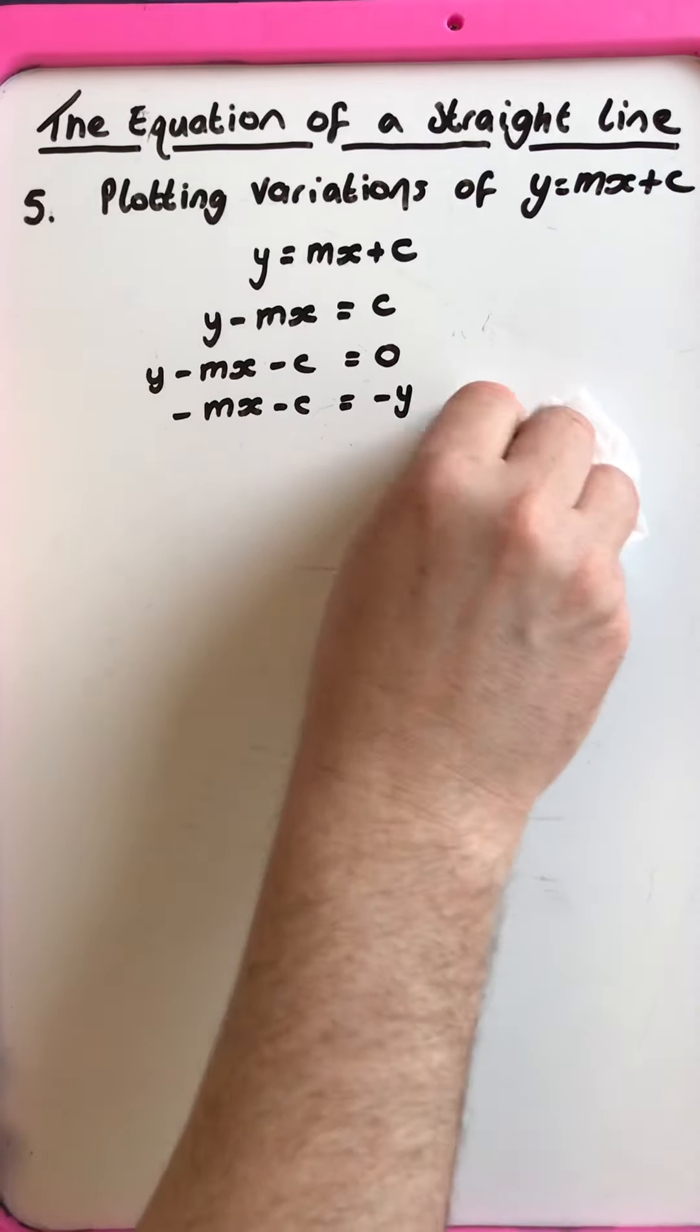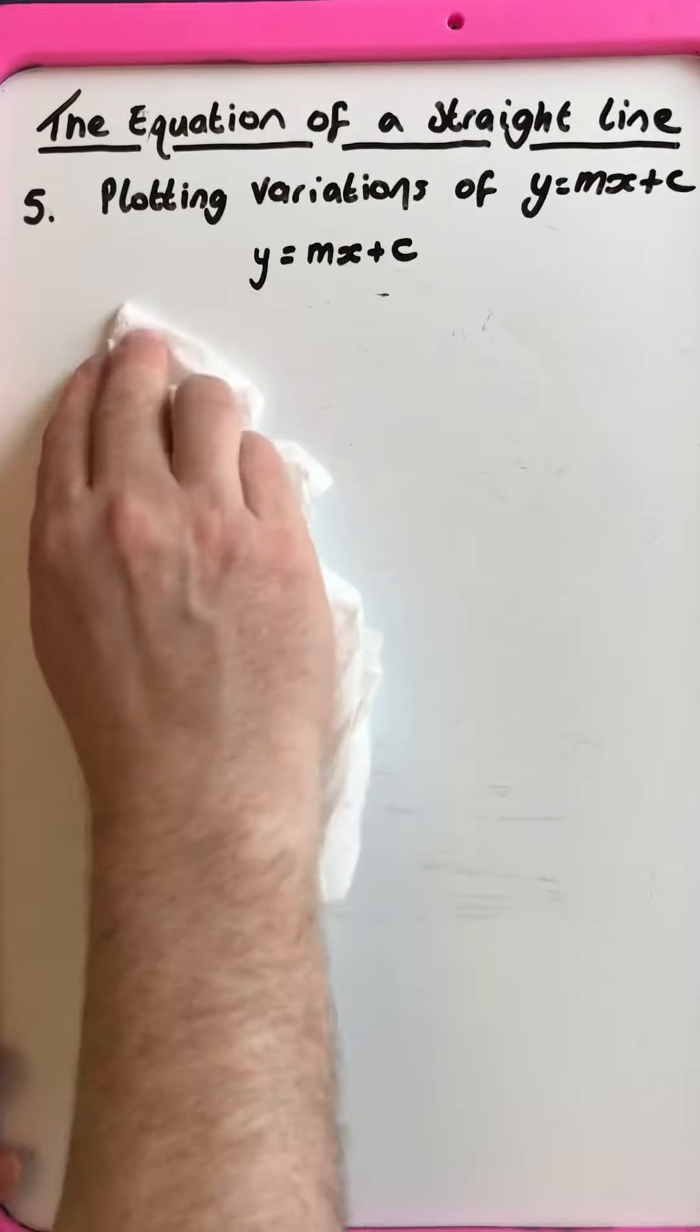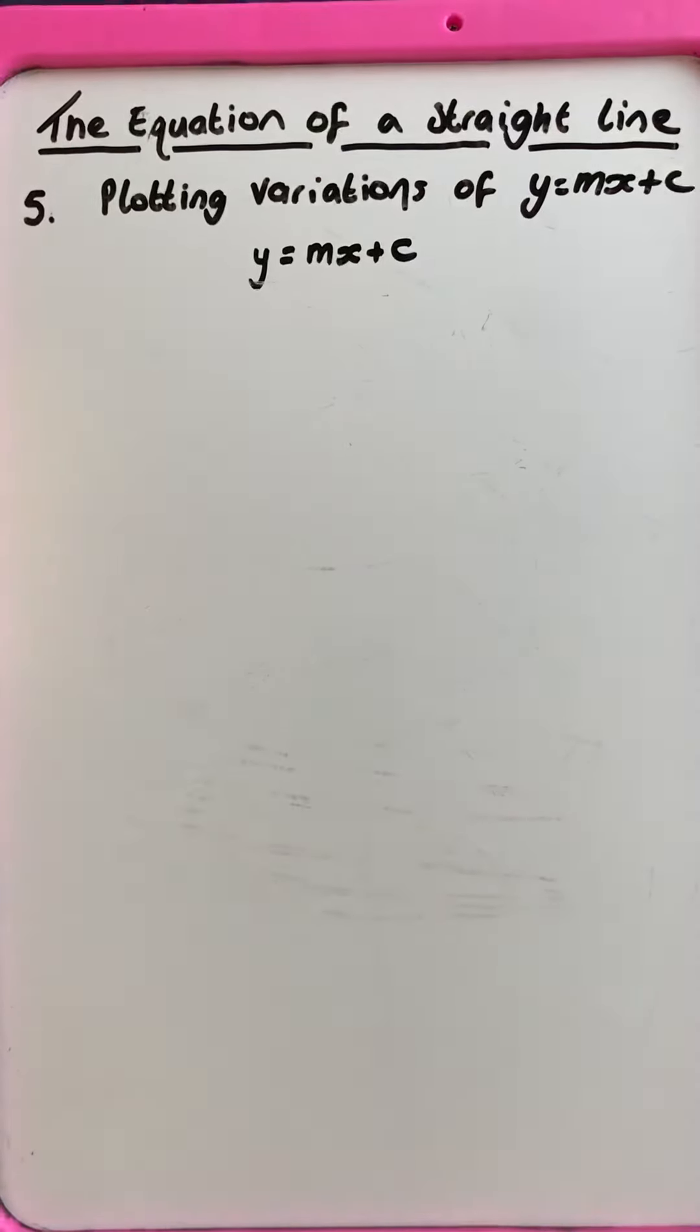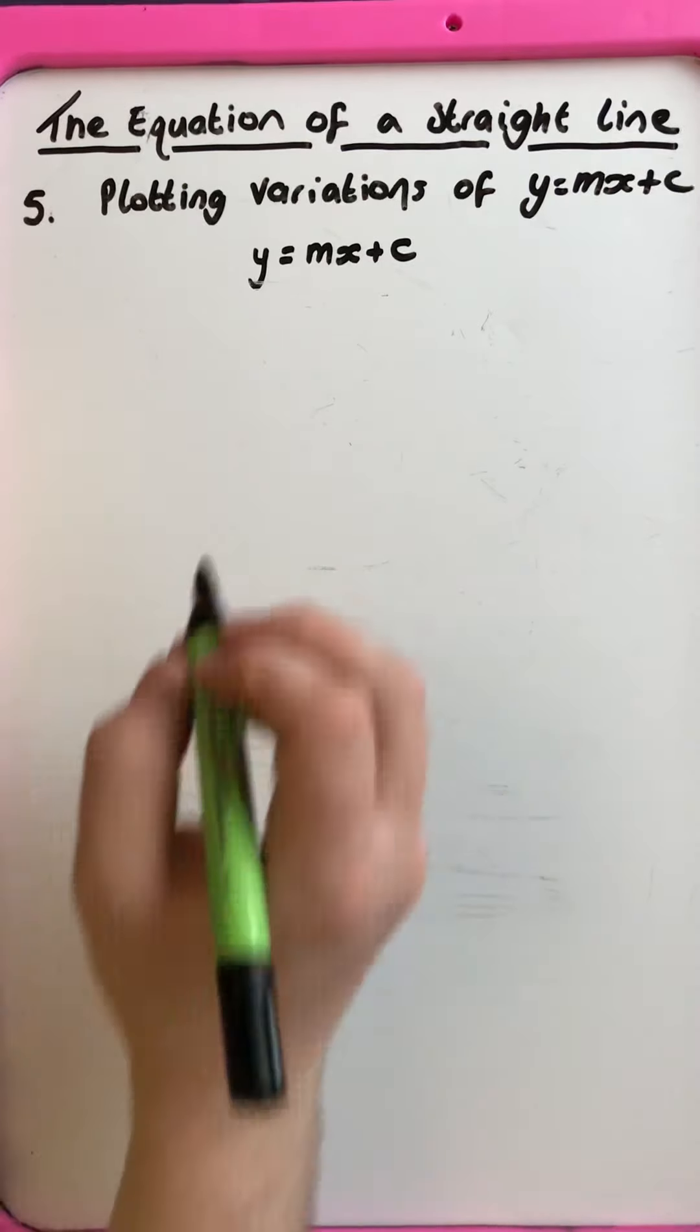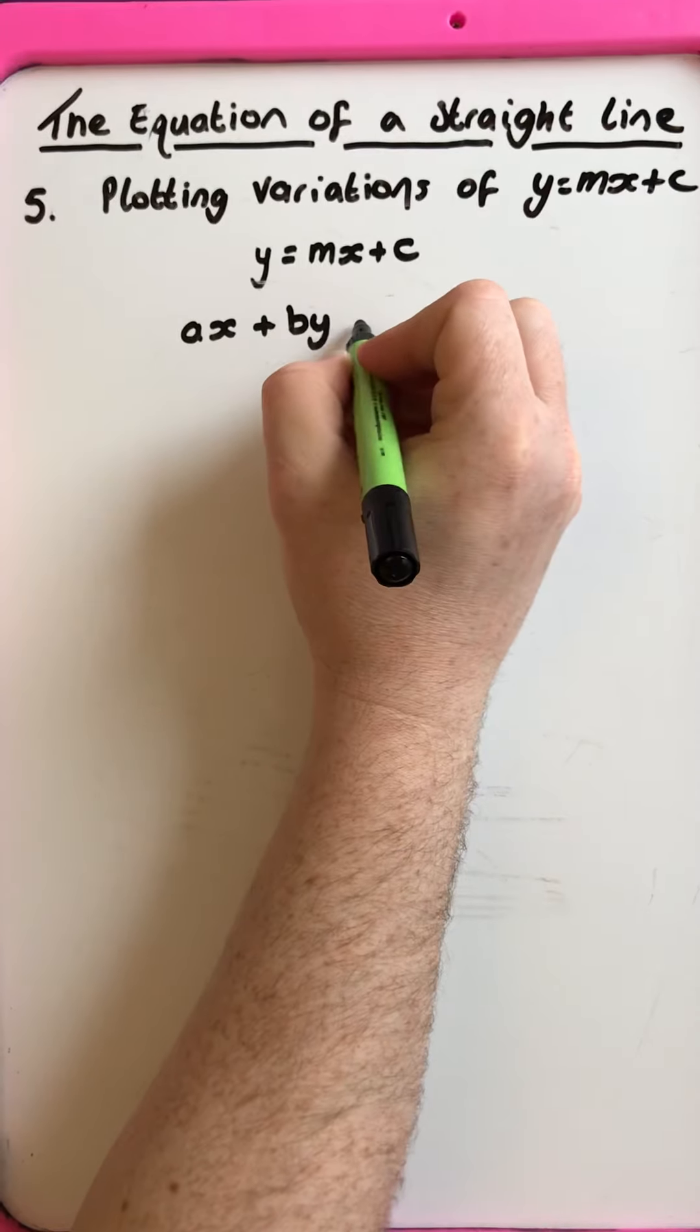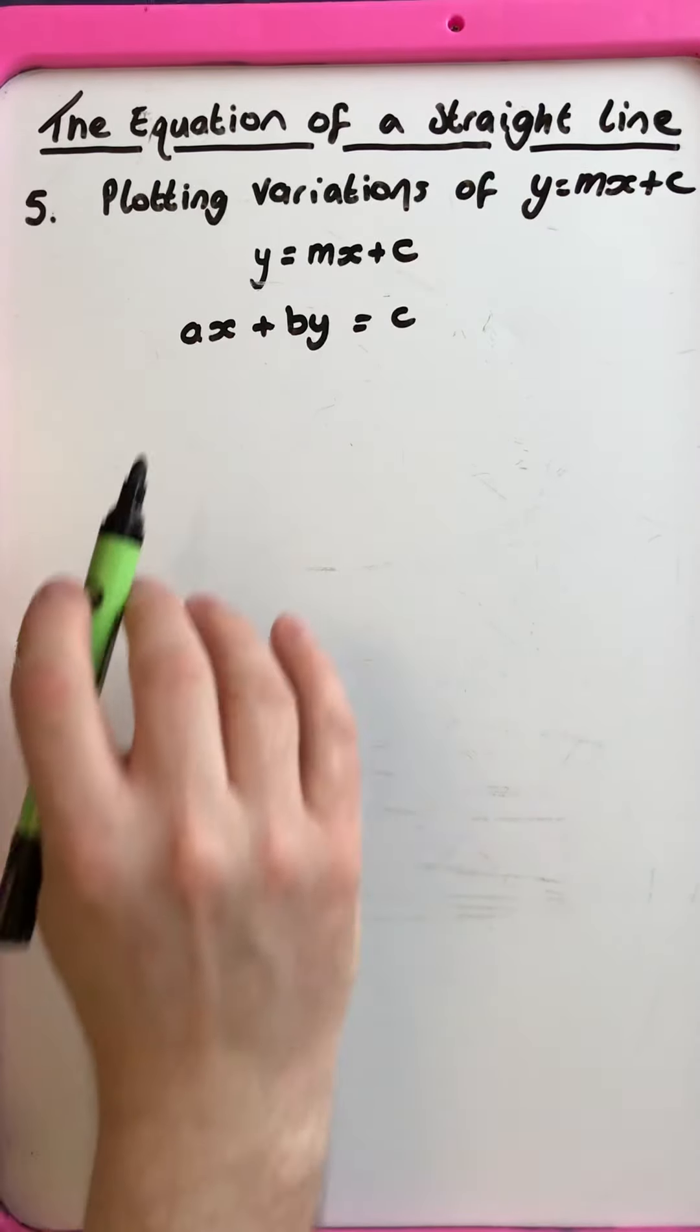So in particular today we are going to look at forms which are not y equals mx plus c and we're going to plot it in that form. There are other methods to do this. So we are going to look at, let's say in general, ax plus by is equal to c, and these are just variables.